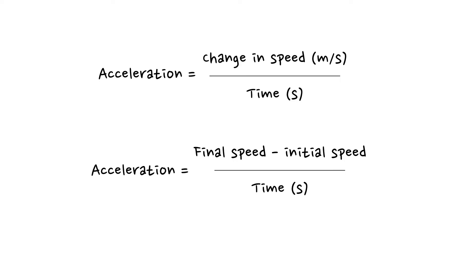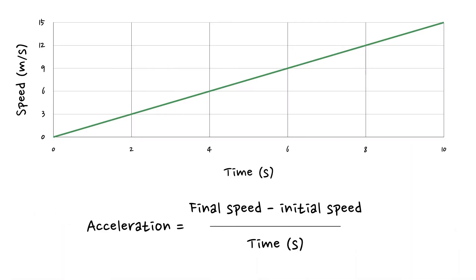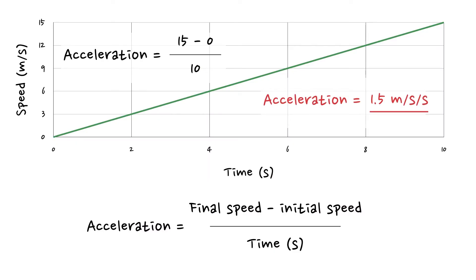Now in order to calculate the acceleration, we need to find the change in speed divided by the time it took to make that change. So the calculation we're going to use is final speed minus initial speed divided by the time. So in this particular example, the final speed is 15 meters per second, and the initial speed was zero because it started from standing still. So the calculation is 15 minus zero, divide that by the 10 seconds it took to make that journey. So 15 divided by 10 gives us an acceleration of 1.5 meters per second per second.